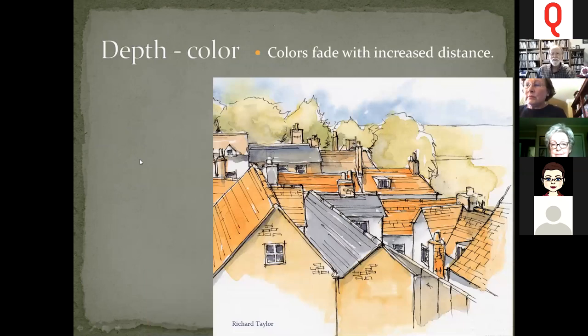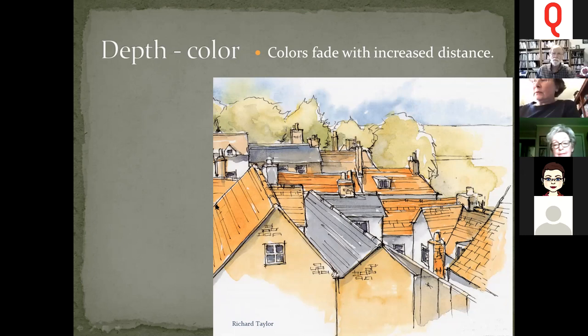Color becomes less saturated with increasing distance. In a sketch of rooftops, the orange roofs are vivid in the foreground but start to wash out in the background, also taking on a blue cast — just like aerial perspective. Starting to wash out colors in the distance will increase the sense of depth in a painting.